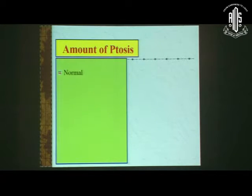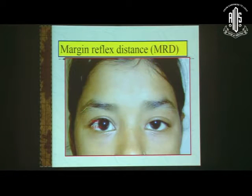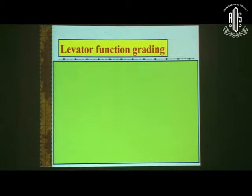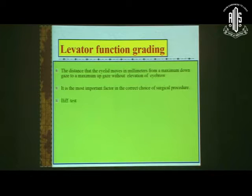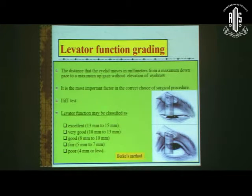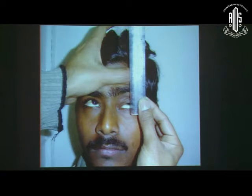The amount of ptosis — whether mild, moderate, or severe — depends on the MRD, the margin reflex distance. The palpebral fissure height and width are also important. Levator function grading is the most important factor in the correct choice of surgical procedure. We measure the distance the eyelid moves in millimeters from maximum down gaze to maximum up gaze without elevating the eyebrow.